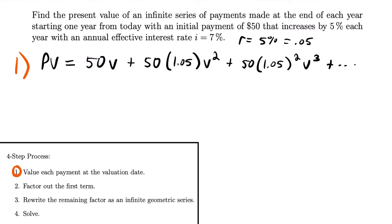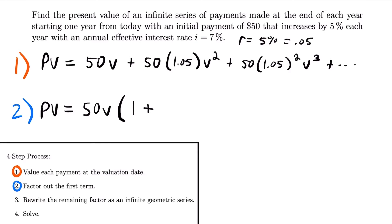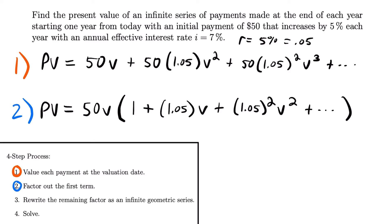Step two is to factor out the first term. The present value equals 50v times the quantity: 1 plus 1.05·v plus 1.05²·v² and so on. We pull 50v out of every term, leaving just 1 from the first term, then 1.05·v from the second, then 1.05²·v² from the third, and this series continues forever.